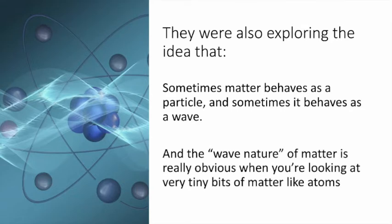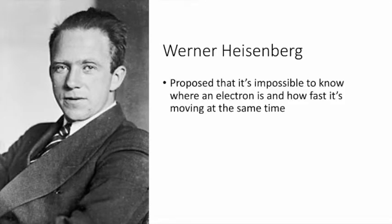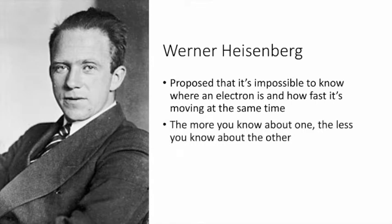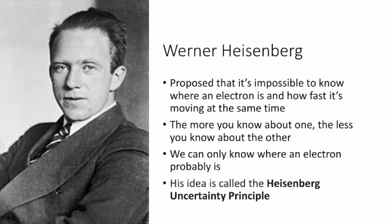This wave nature of matter is really obvious when you're looking at very, very tiny bits of matter like atoms. Werner Heisenberg proposed that it's impossible to know where an electron is and how fast it's moving at the same time. The more you know about one, the less you know about the other. We can only know where an electron probably is. His idea is called the Heisenberg Uncertainty Principle.